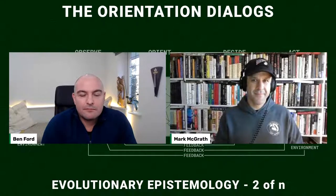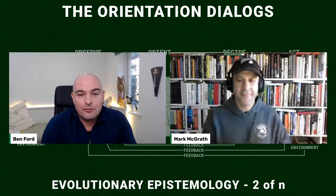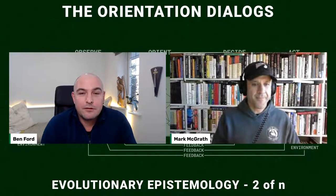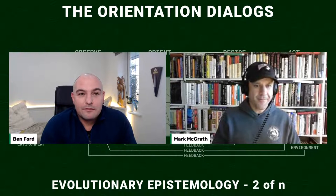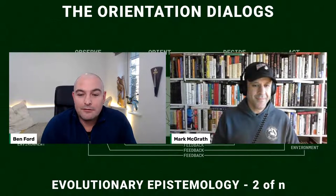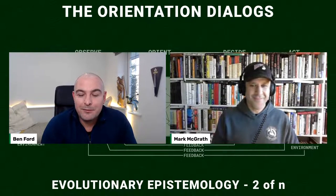This is episode four of our exploration of John Boyd's work, specifically episode two of N exploring Boyd's paper — or rather Chuck Spinney's paper about Boyd's work — on evolutionary epistemology. It's episode two of N because this is probably one of the most important pieces of work in the Boyd canon and we've got no idea how many episodes we'll need to get to the bottom of this.